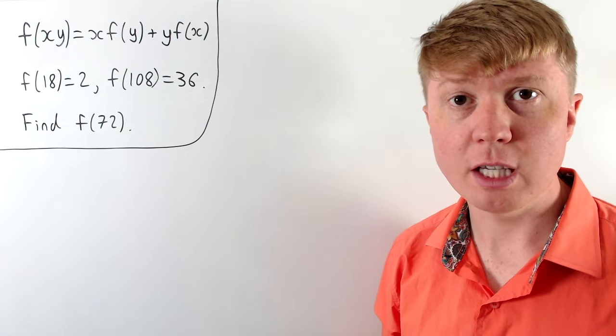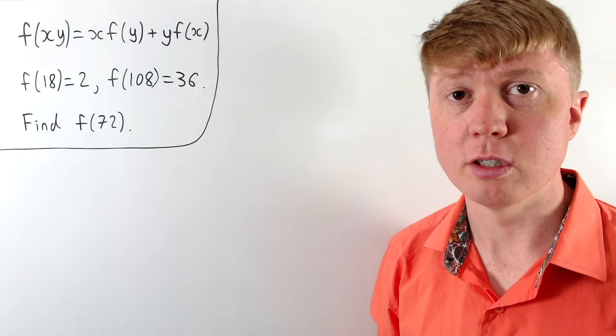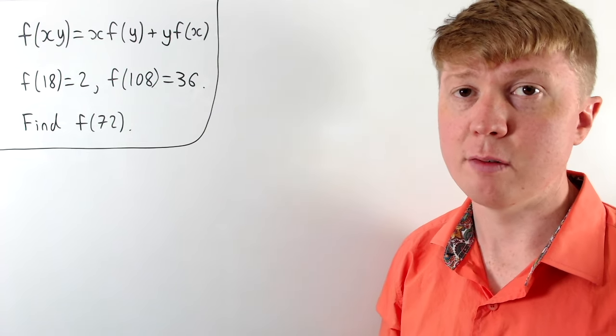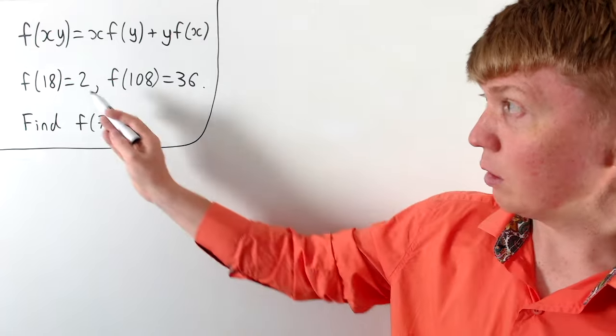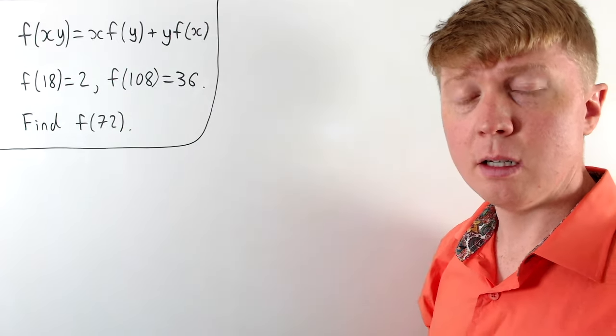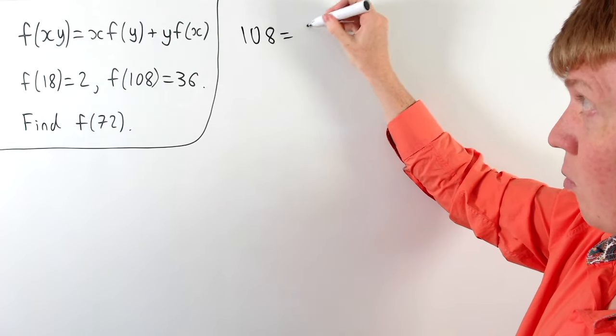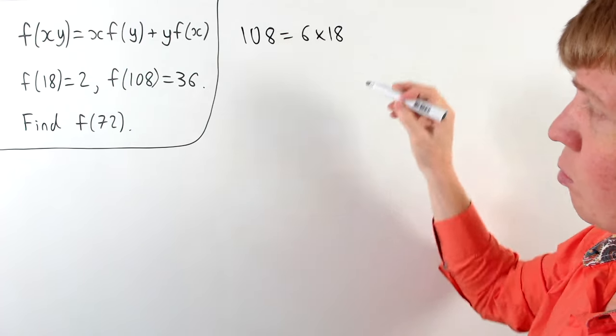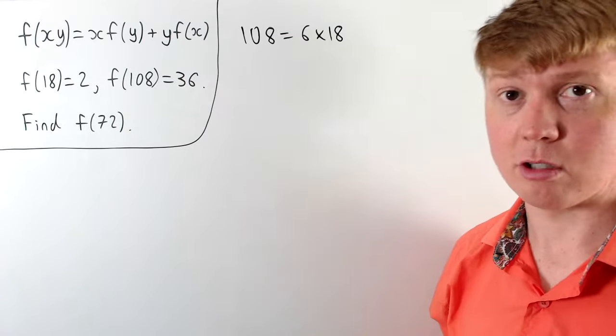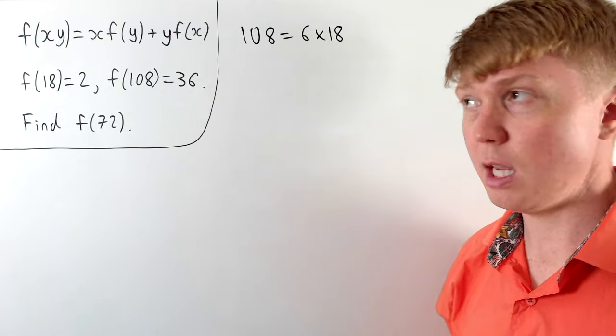We'll start by seeing how we can use this functional equation to generate the value of f at different numbers. So we know the value at 18 and 108, and you could actually notice here that 108 is 6 times 18. So we could use this functional equation now to generate the value of f at 6.